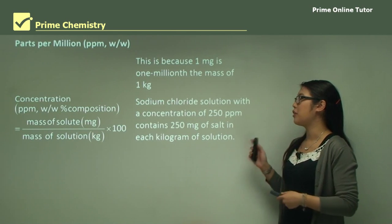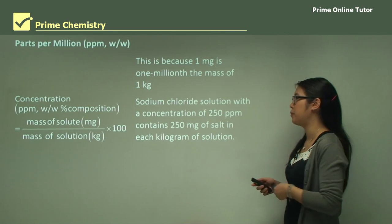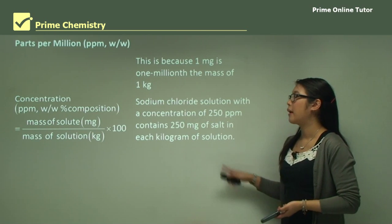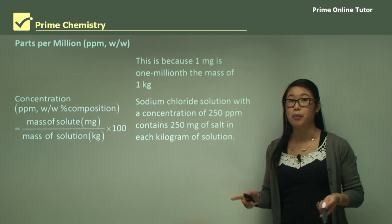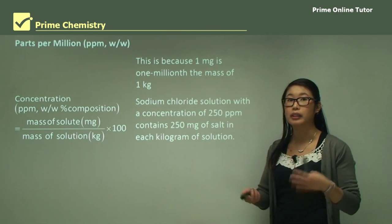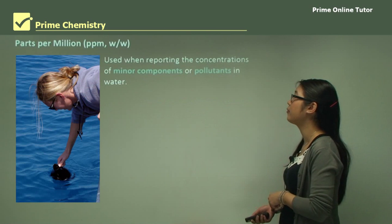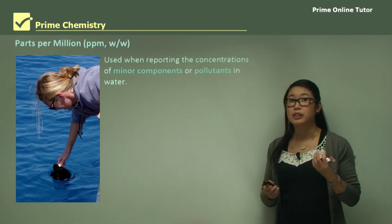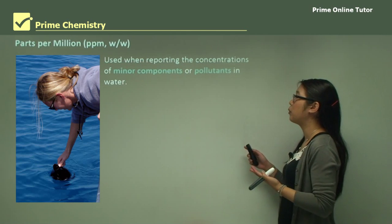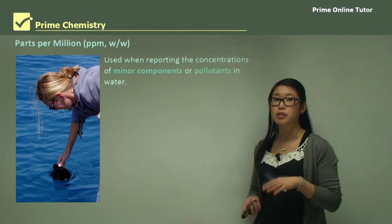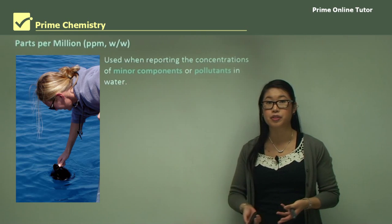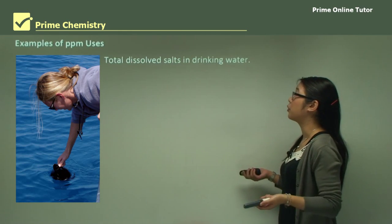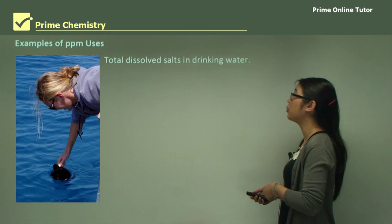For example, a sodium chloride solution with a concentration of 250 parts per million really contains 250 milligrams in each kilogram of solution. This is really important when reporting very dilute solutions — like when looking at salt or phosphate concentrations in water testing, or measuring total dissolved solids in drinking water.